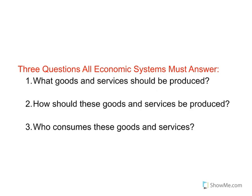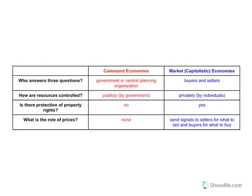There are a lot of different ways to tackle these three questions, but the answers form the basis for an economic system. There are two really large categories of economic systems. I'll also mention two others: traditional economies, which are very rare anymore — very agricultural-based, maybe found in some remote tribes today. And the most common other type is a mixed economy, which is a combination of the two main ones I'm going to talk about: command and market.